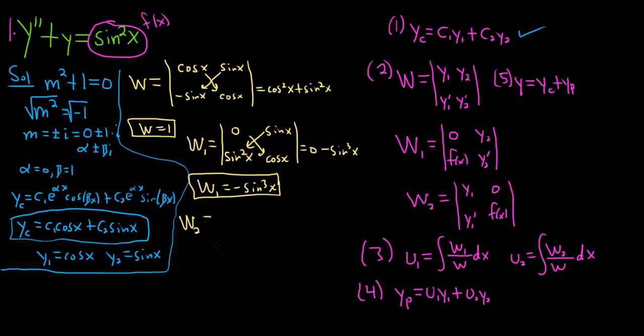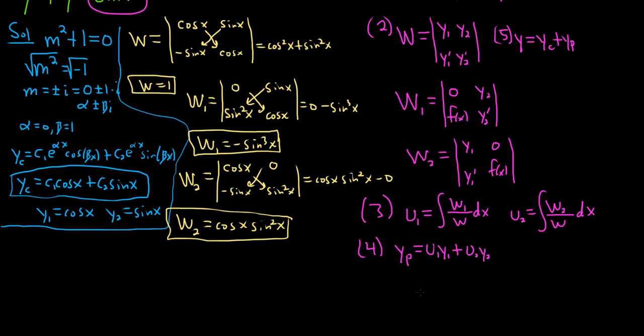And then w2 will keep the first column. So cosine x, negative sine x. And then we replace the second one with 0 f of x. So 0 sine squared. So this times this, minus this times this. So we get cosine x, times sine squared x, minus 0. So w2 is equal to cosine x sine squared x. Really nice problem. The integrals that we get, that we're going to get now, in step 3, because we've completed step 2 by the way, are going to be kind of interesting. And they're not like super easy, but they're not super hard either. They're good. They're good problems.